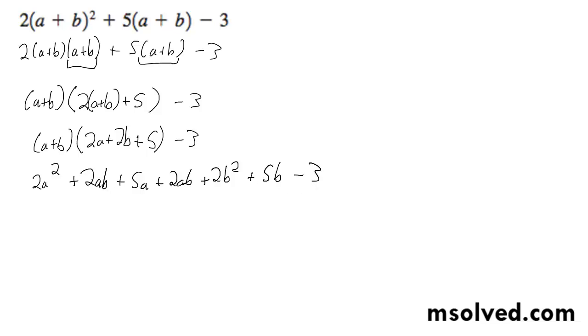And the only things that need to be grouped together here that I see are the ab's. So we get 2a squared + 2b squared + 4ab + 5a + 5b - 3. That's it.